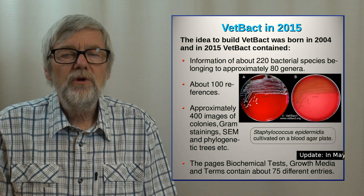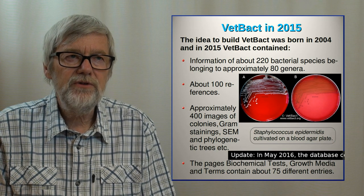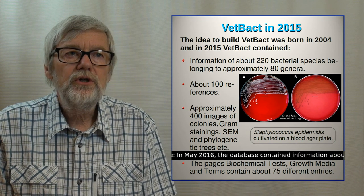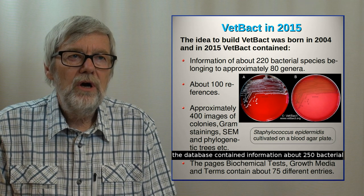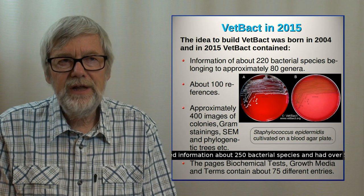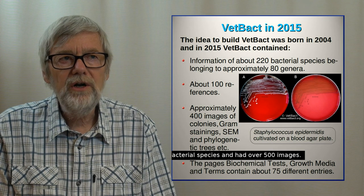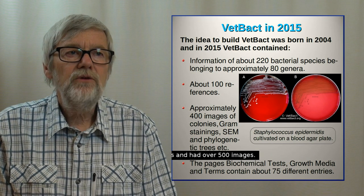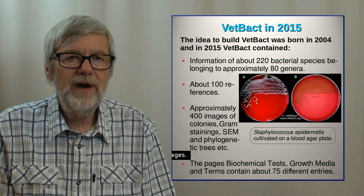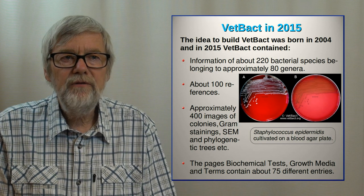The idea of VetBACT was born in 2004 when I started to give lectures for veterinary students. Now VetBACT contains information about 220 bacterial species belonging to approximately 80 different genera. We have about 100 references — to theses, to articles and to other websites — and you can find approximately 400 different images of bacterial colonies, gram stainings, scanning electron microscopy of bacteria, and phylogenetic trees.